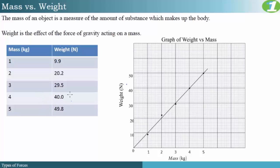Using experimental data in a table, mass is simply the amount of substance making up the body and weight is the effect of gravity on that body. Mass data was generated using a beam balance and weight data using a spring balance. From a plot of weight versus mass, we see a direct relationship given by a straight line of best fit, indicating a constant gradient representing the relationship between weight and mass.